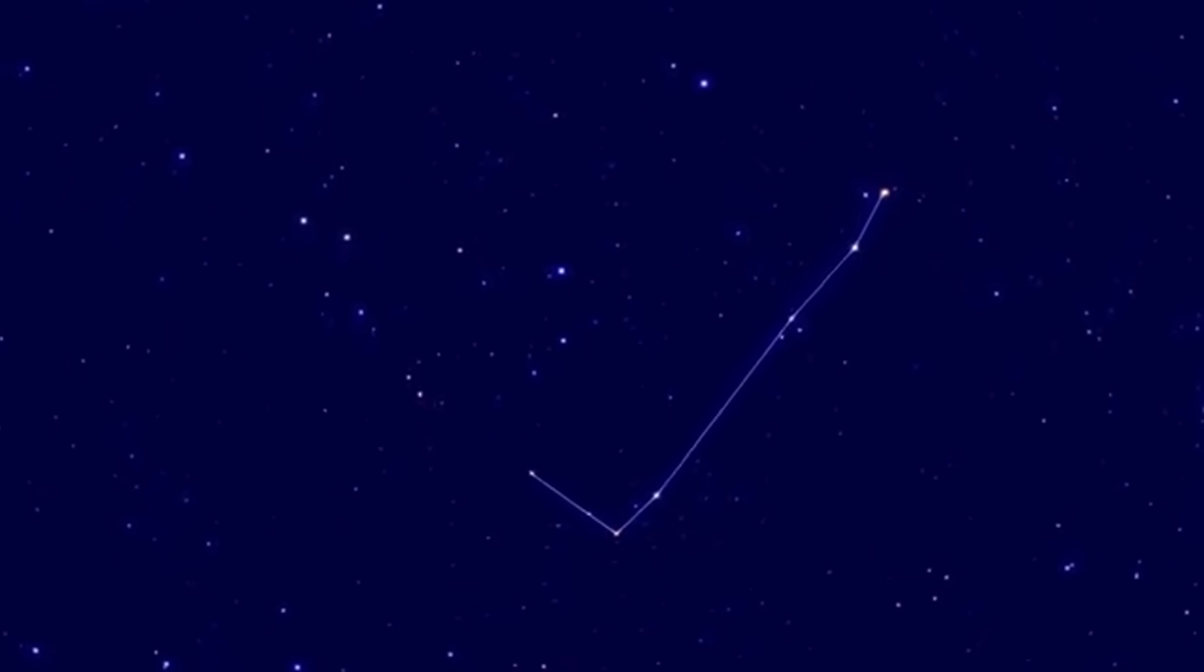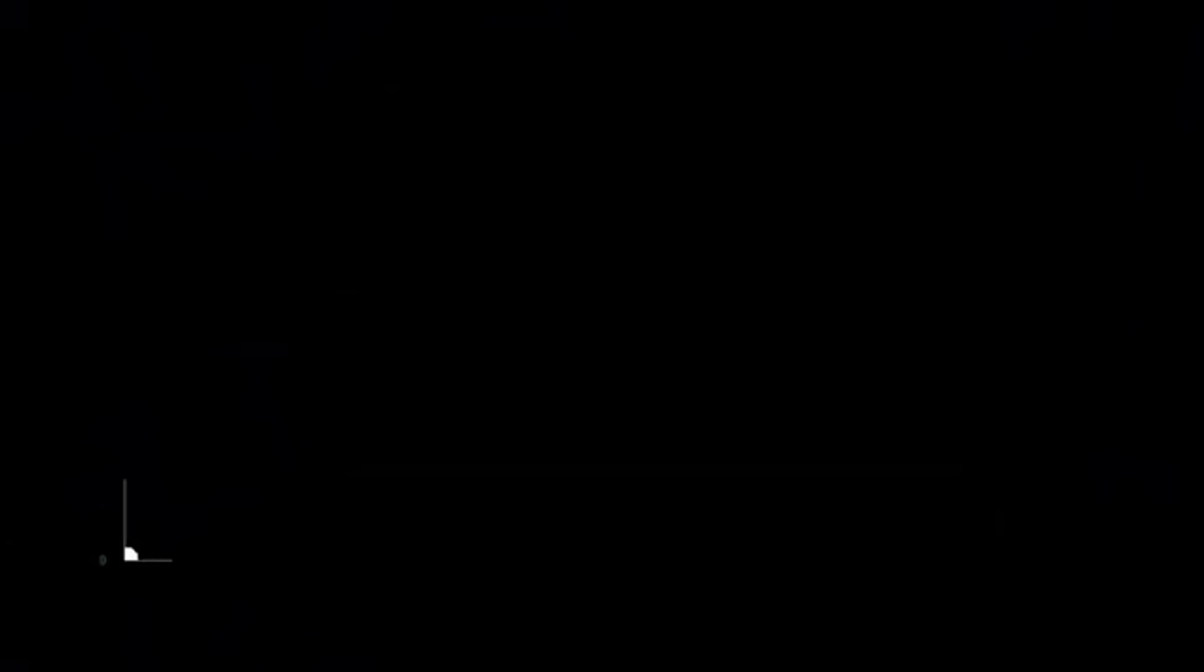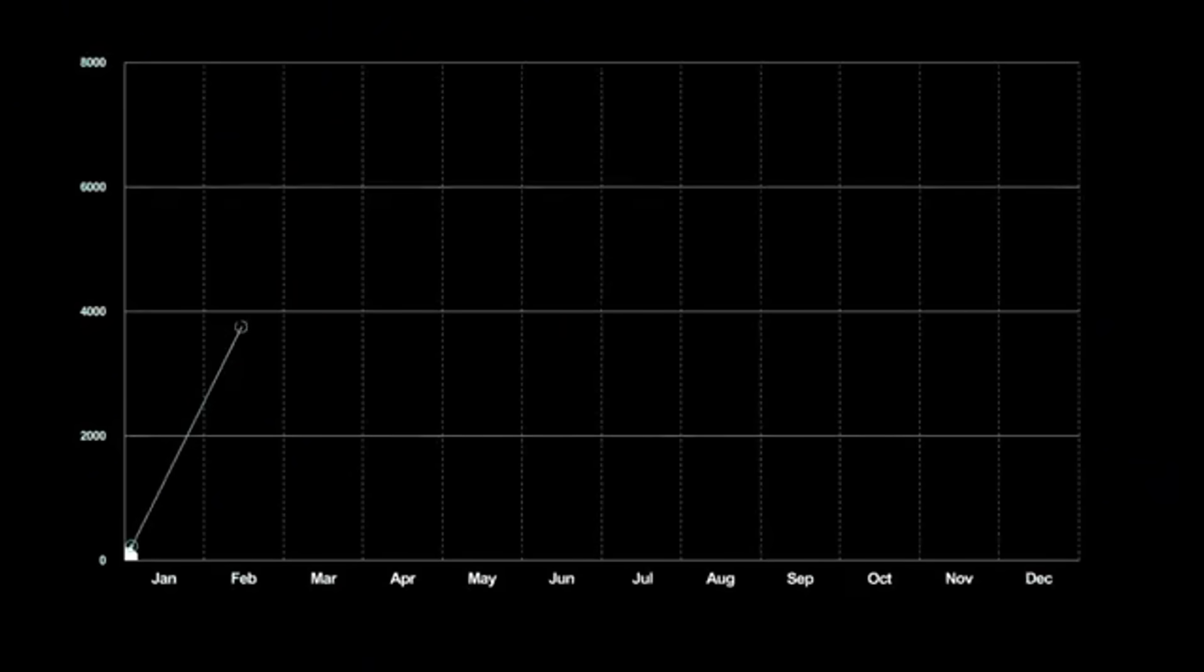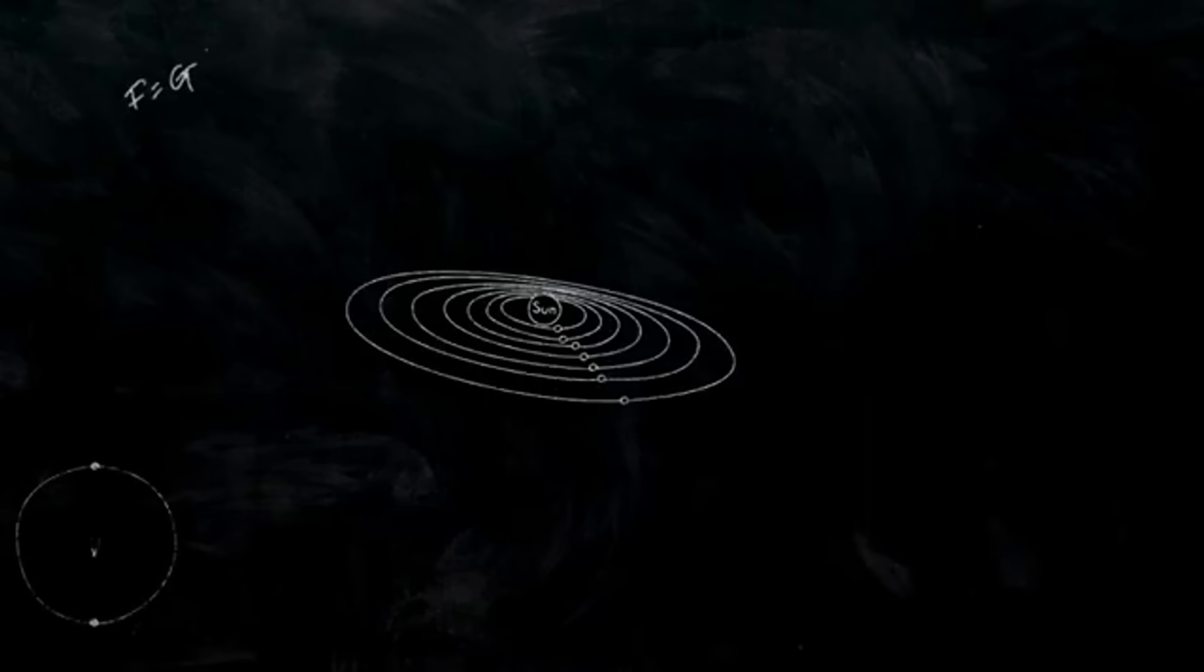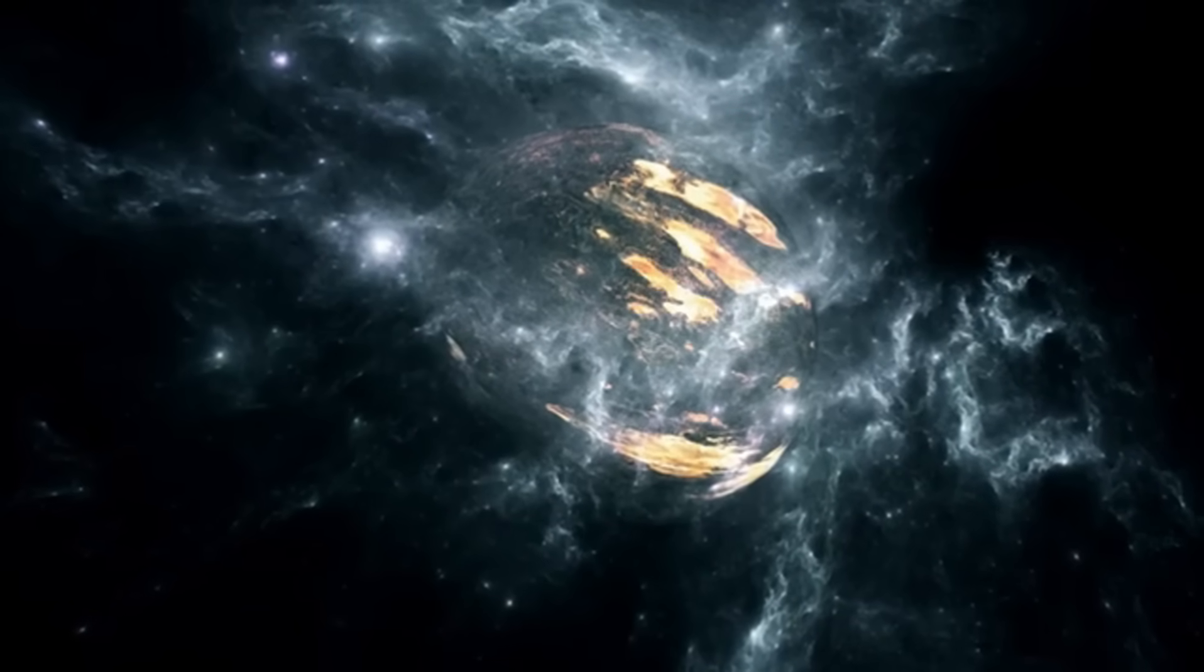A supernova visible from Earth would be a once-in-a-lifetime spectacle, an event unmatched in modern human history. As data poured in from telescopes around the world, the prevailing assumption was that Betelgeuse was on the cusp of a colossal life-ending explosion. Yet, despite the fluctuating brightness, the long-awaited blast never arrived, leaving scientists puzzled and eager for better answers.